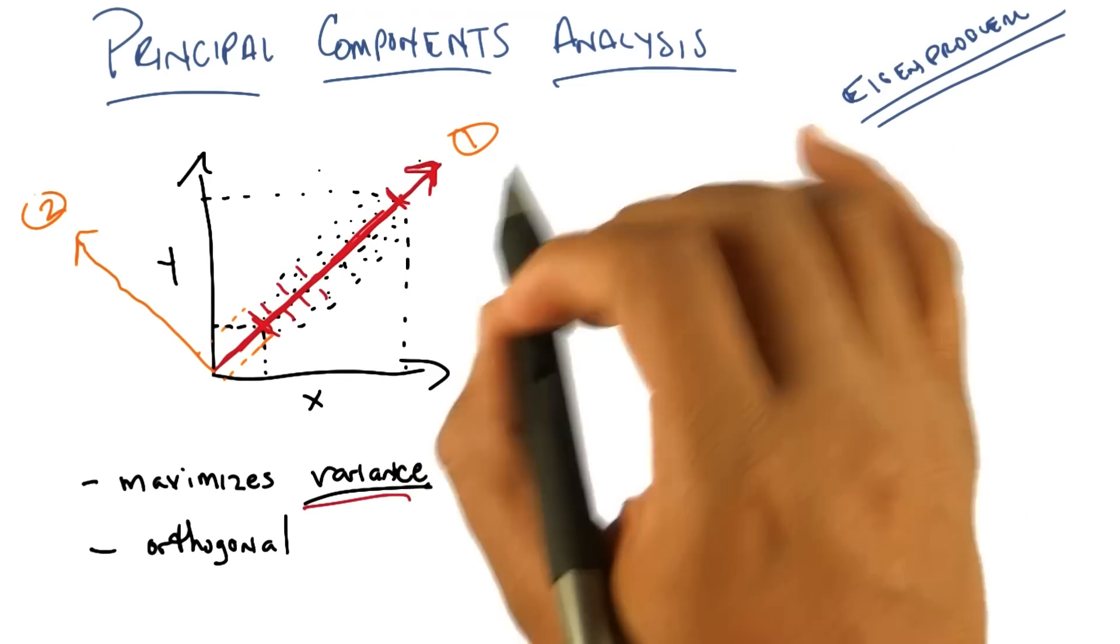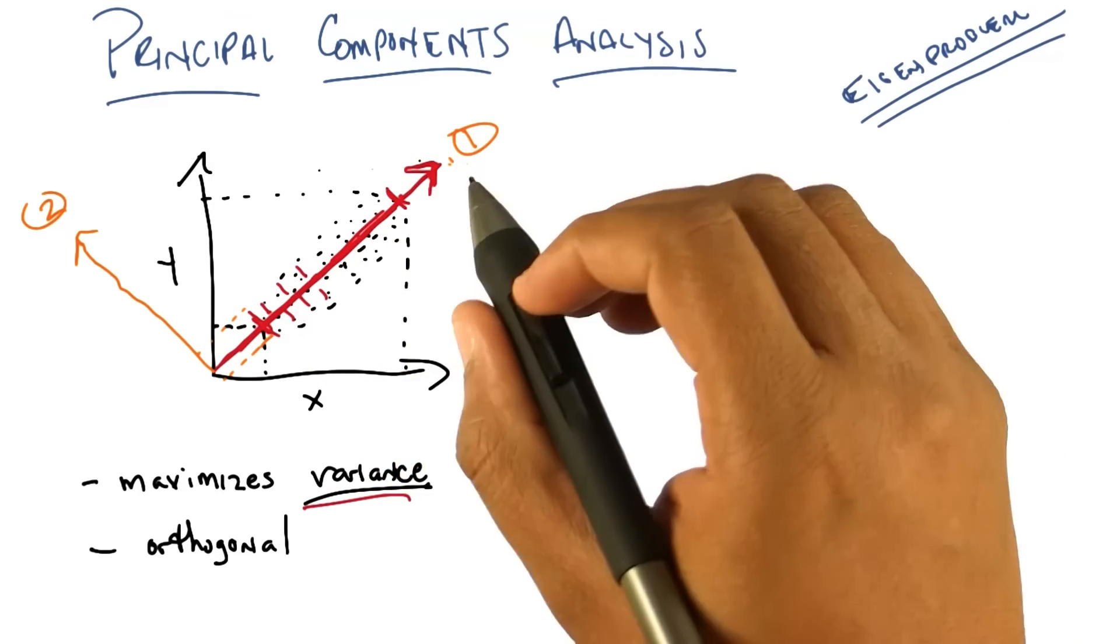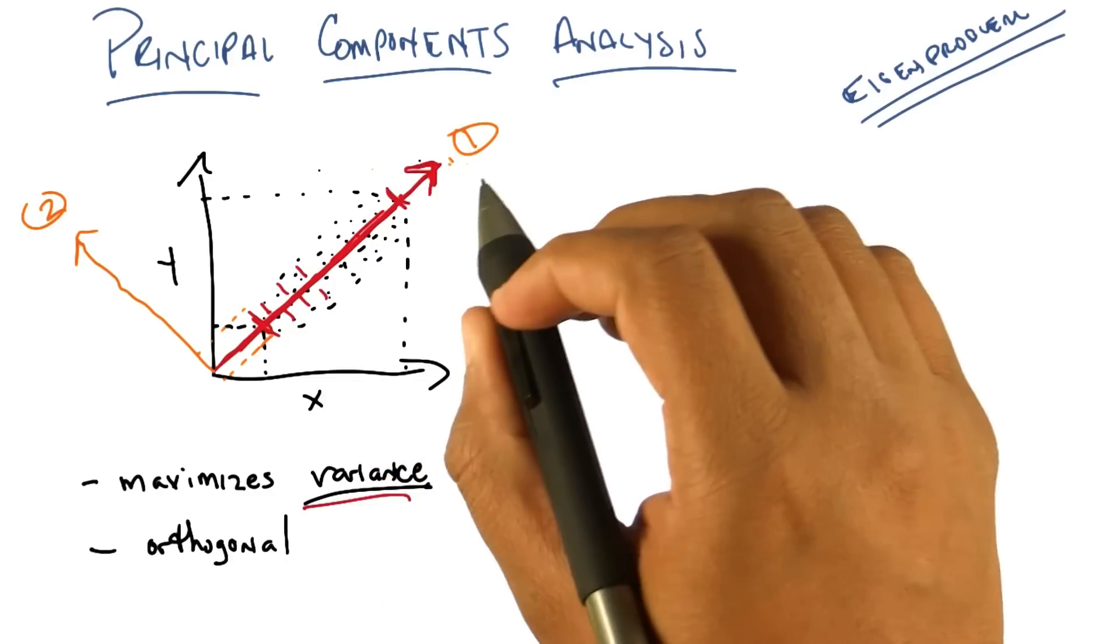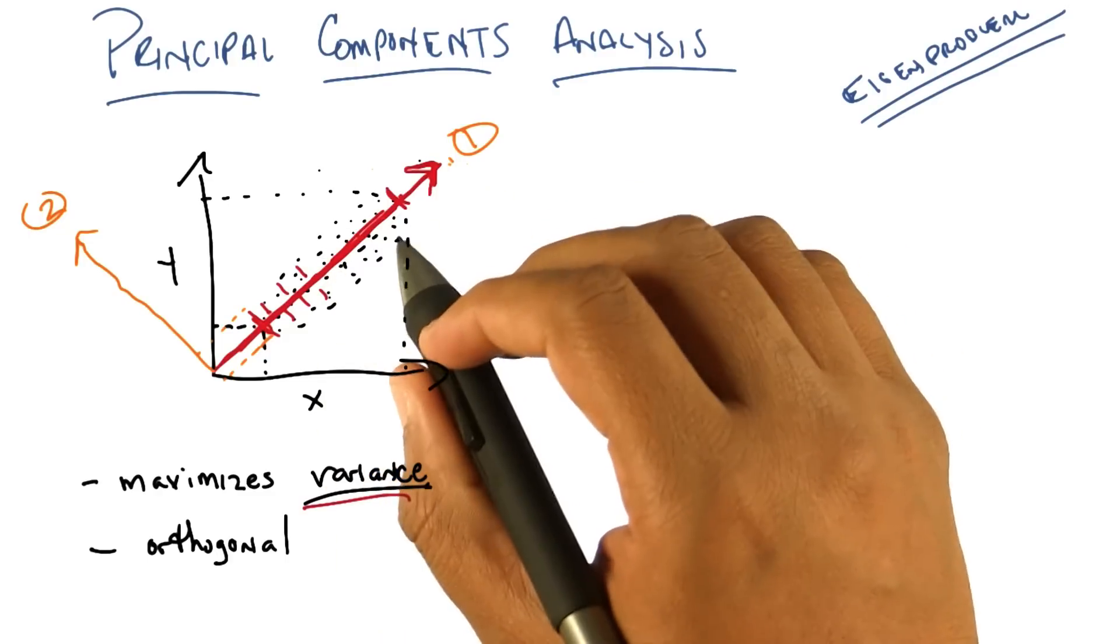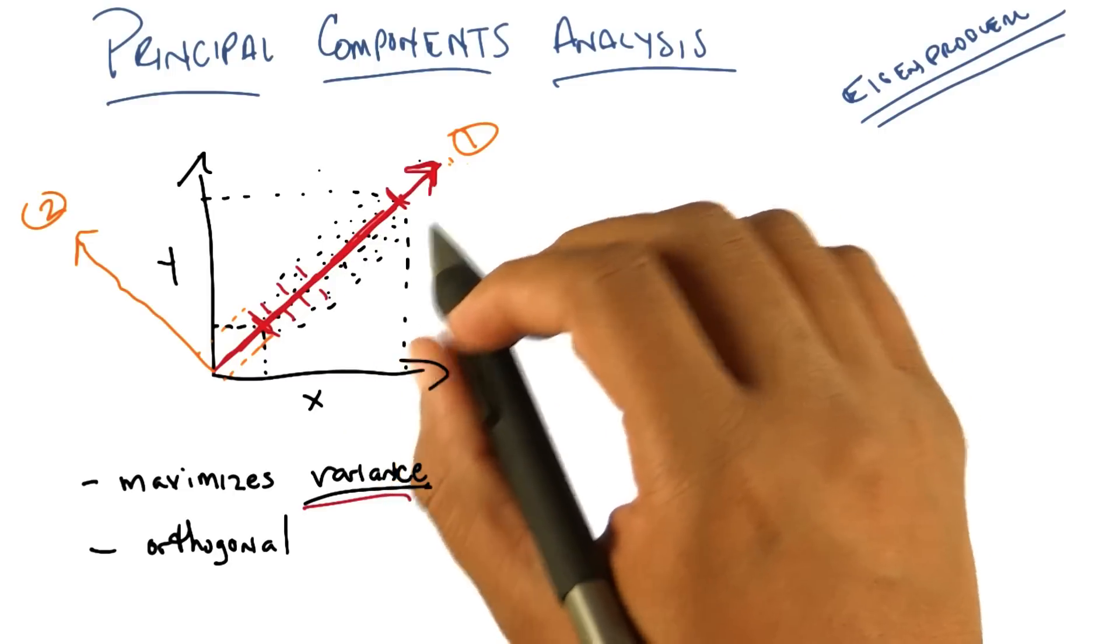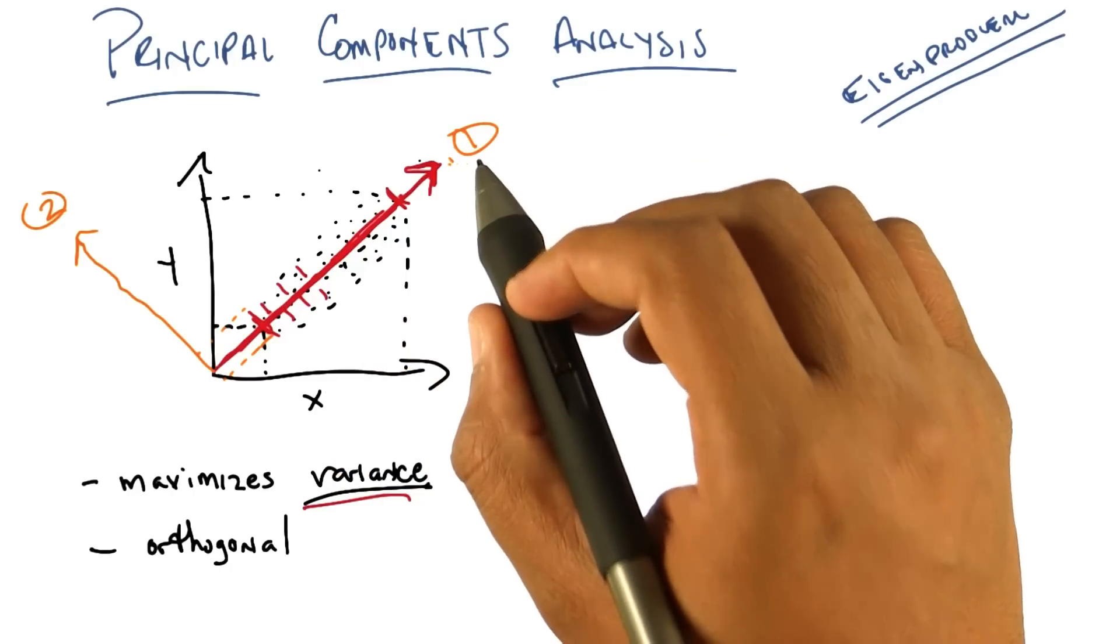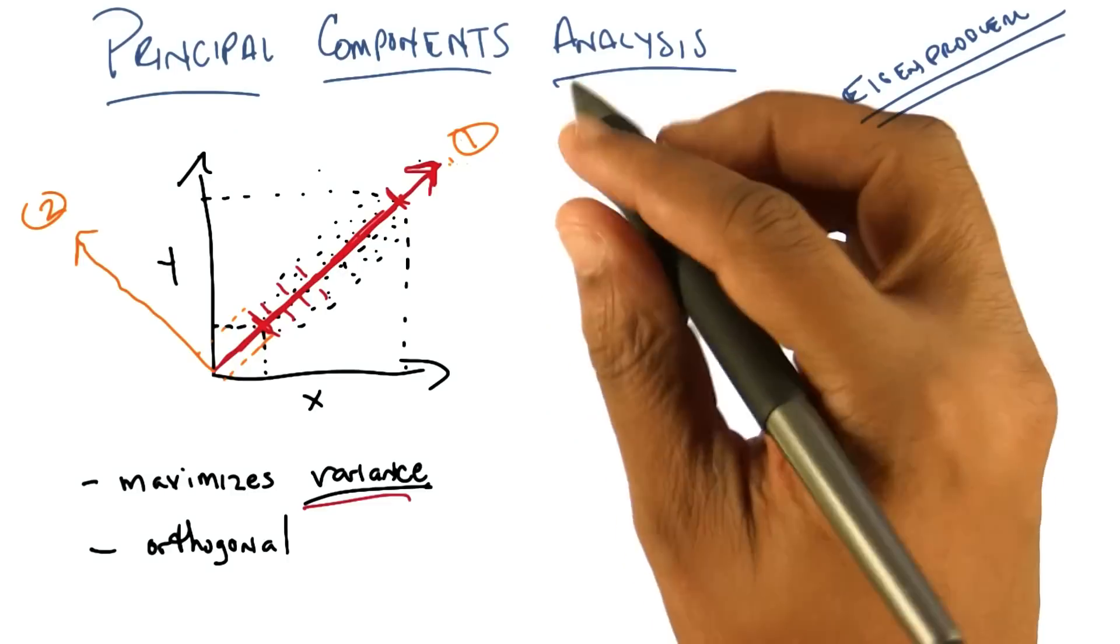Now, here's what's interesting about principal components analysis. You might ask me exactly how you do this. There are several mechanisms for doing it. For those of you who have dealt with linear algebra before, something like singular value decomposition might be familiar to you. It's one way of finding the principal components. But principal components analysis basically has a lot of really neat properties. So, let me just describe some of those properties to you.